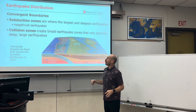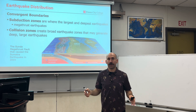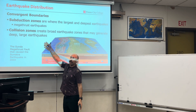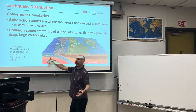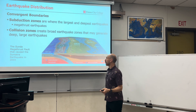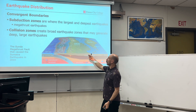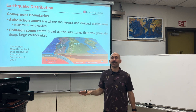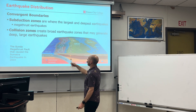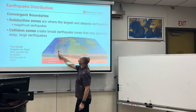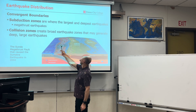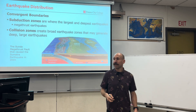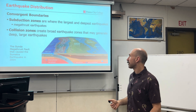Convergent boundaries — subduction zones and collision zones — these are the biggest earthquakes we've got. Collision zones would be the Himalayas; when the Himalayas are growing, they have big earthquakes, such as the Nepal earthquake that happened recently. In a subduction zone, the Sumatra earthquake of 2004 was terrible — it killed hundreds of thousands of people because the megathrust fault happened out at sea and sent a tsunami that hit the coast of Sumatra. It's an absolute tragedy.